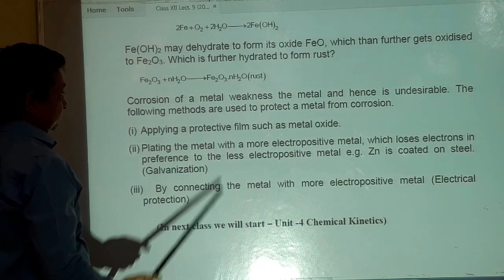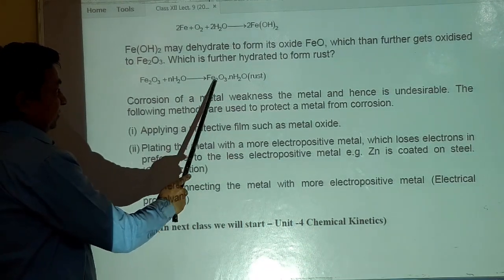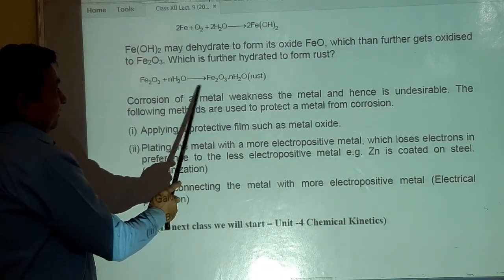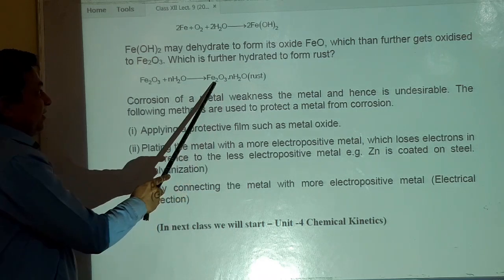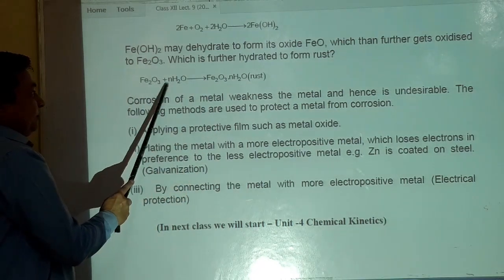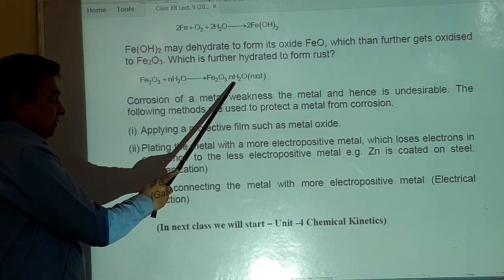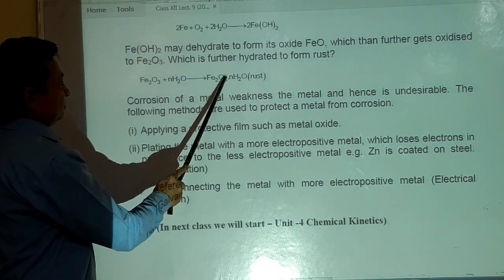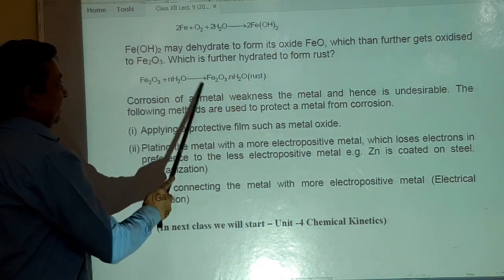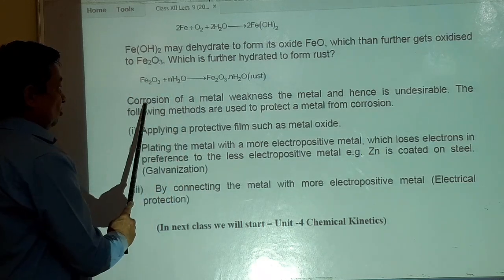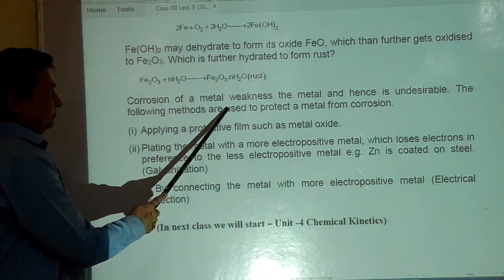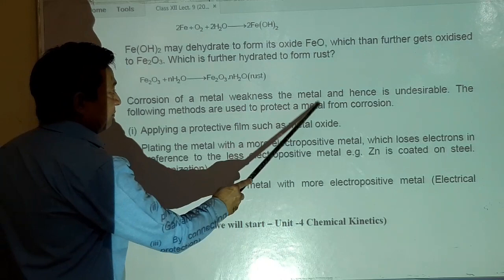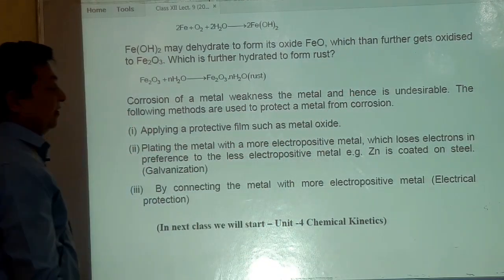Which is further hydrated to form rust. तो rust होता है क्या है? Iron third oxide, hydrated iron third oxide. उसे ही अपन rust बोलते हैं. Fe2O3 plus nH2O. अब n के value कुछ भी हो सकती है. Fe2O3 dot nH2O. यह क्या है? Rust. Corrosion of a metal weakens the metal and hence is undesirable.